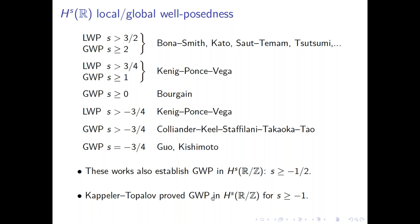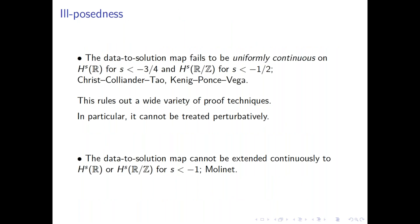To understand what to expect, one should look at the ill-posedness results. First, the data-to-solution map fails to be uniformly continuous in H^s as soon as s < -3/4 on the real line and s < -1/2 on the torus — perfectly matching the Go-Kishimoto results, proved by Christ-Colliander-Tao with earlier work by Kenig-Ponce-Vega. This is a mild form of ill-posedness: it doesn't prevent continuity below these regularities, but it rules out treating the nonlinearity as a perturbation of the linear flow, so a different method is needed.